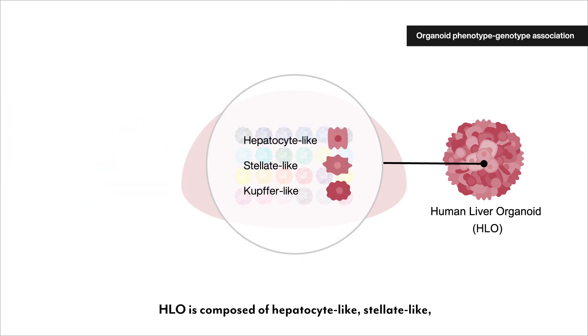HLO is composed of hepatocyte-like, stellate-like, and macrophage-like cells, as evaluated by single-cell RNA-seq.